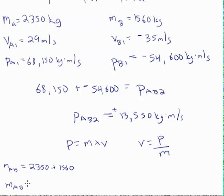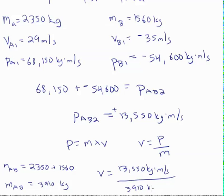So the mass of A and B when they are stuck together is 3,910 kilograms. So our velocity is that momentum we calculated earlier divided by the combined mass. And when we round to two significant figures, we get positive 3.5 meters per second.